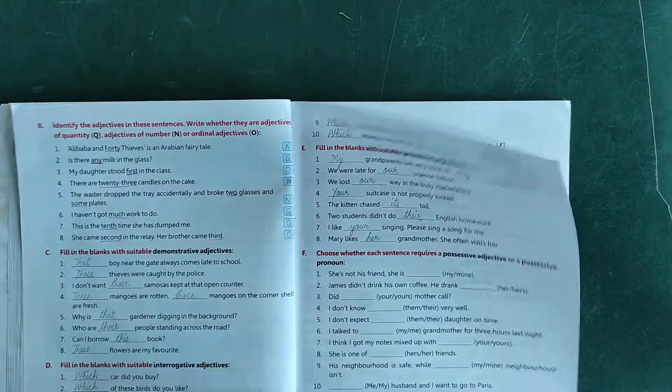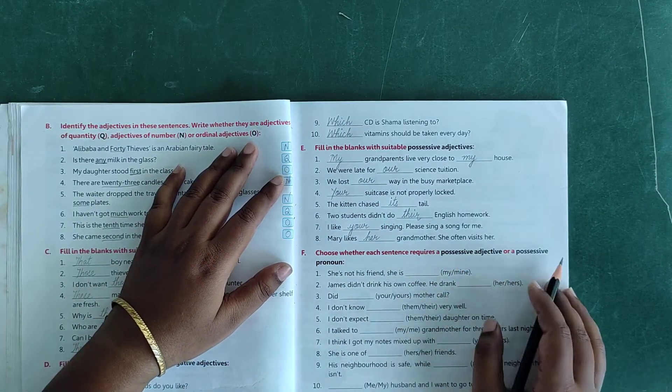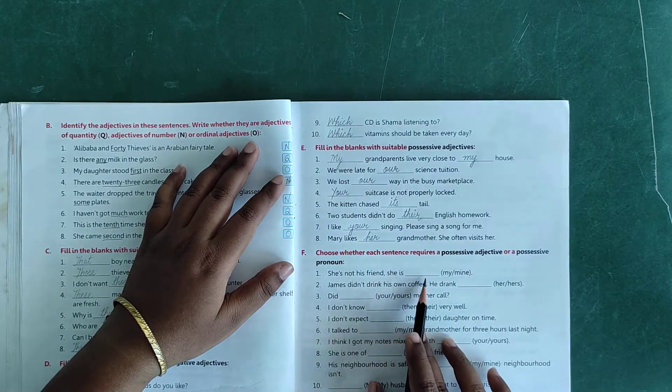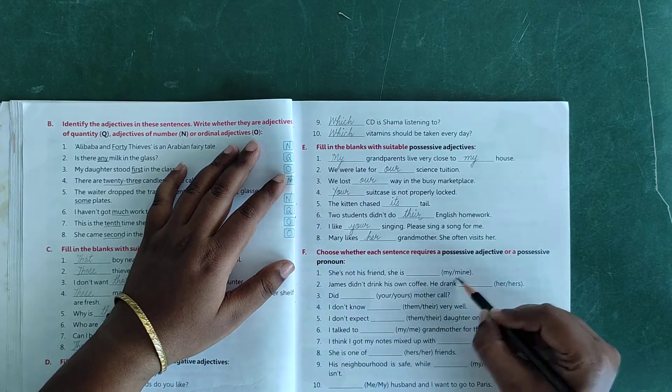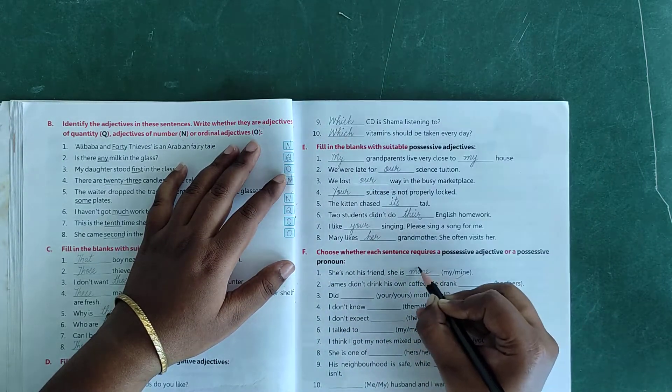Choose whether each sentence requires a possessive adjective or a possessive pronoun. Number 1: she is not his friend, she is dash - mine. She is mine, M-I-N-E.